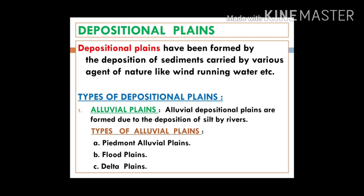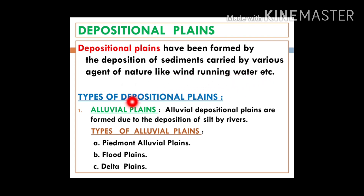Now we will move to depositional plains. As mentioned earlier, depositional plains are formed by deposition of sediments by various agents of nature like wind, running water, etc. The types of depositional plains include alluvial plains. Alluvial plains are of three types.